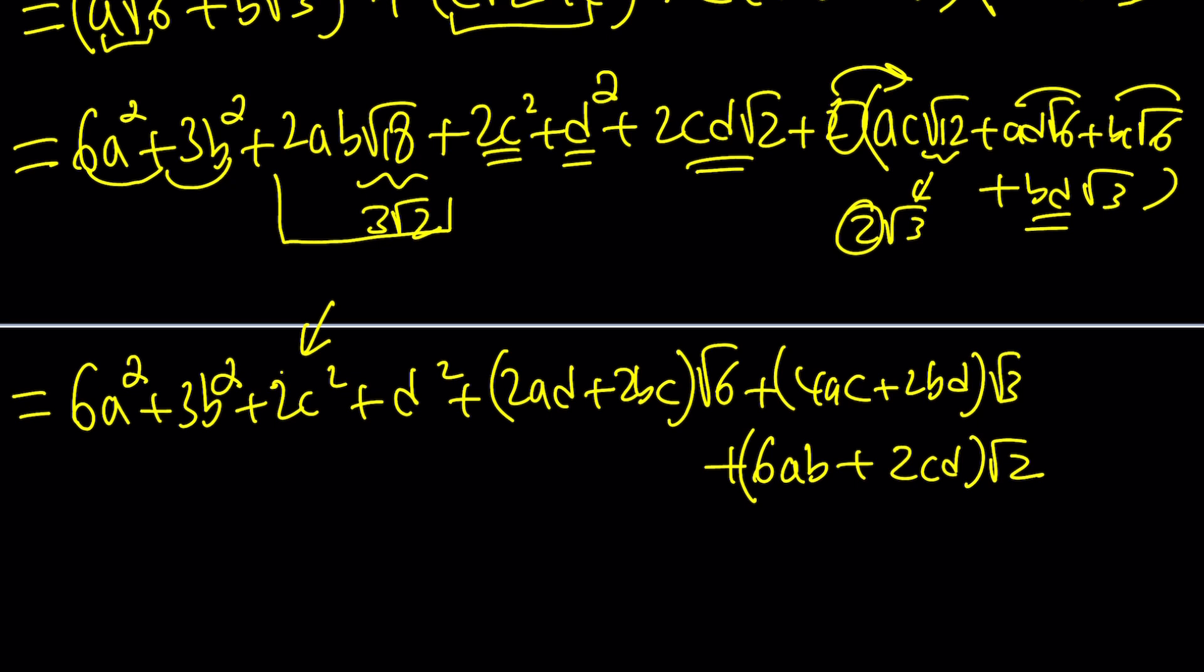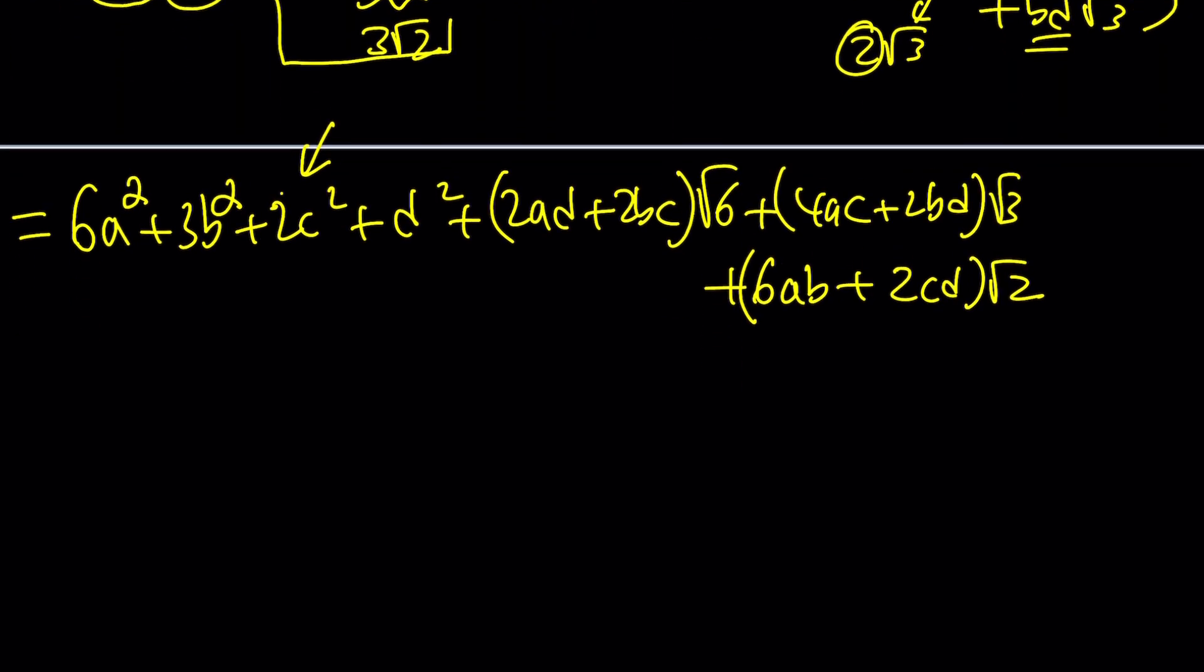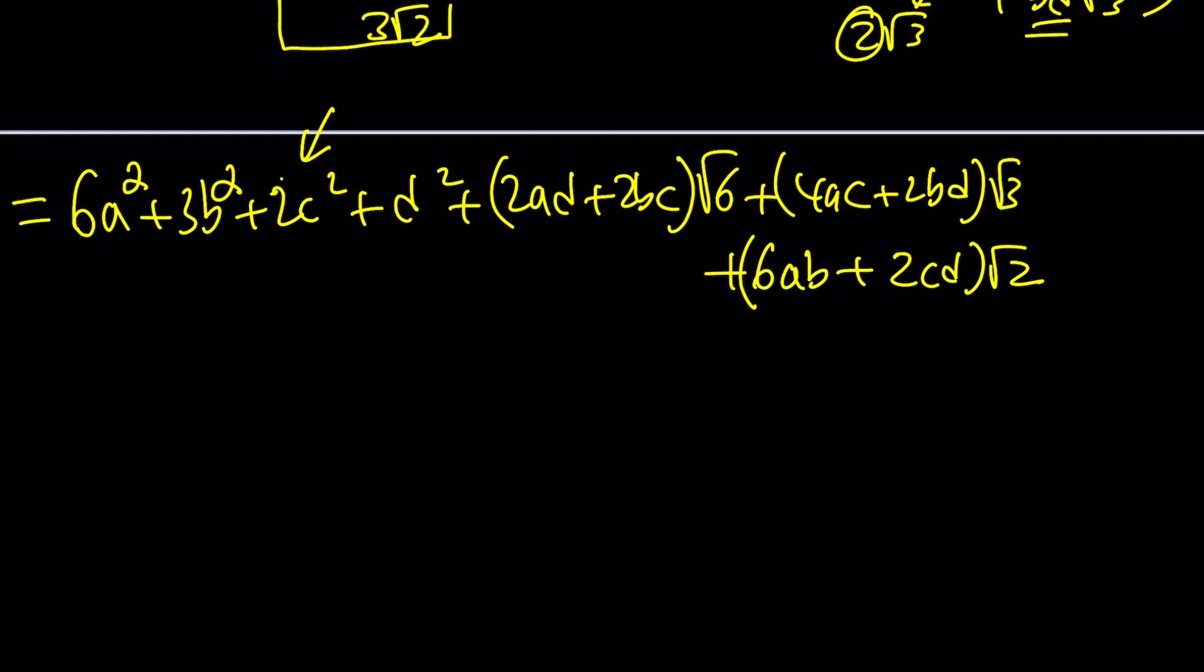I mean, I should probably say rational term, because a, b, c, d are rationals. Otherwise you're not denesting. Now, you can actually go ahead and solve this. This is equal to 6 plus 2 root 6 minus root 3 minus 2 root 2.